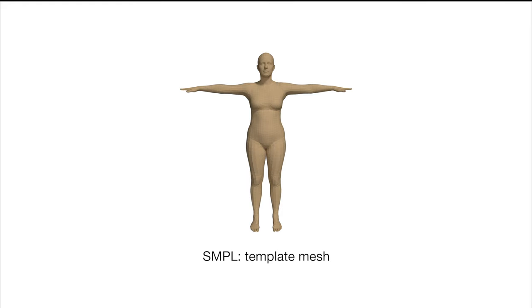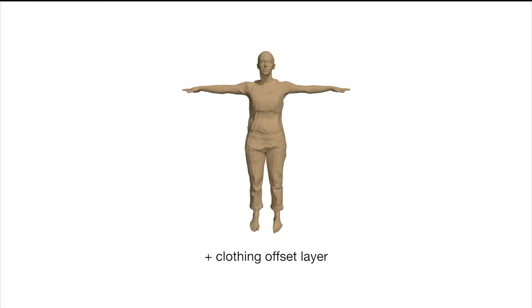SMPL starts from a template mesh and linearly adds offsets to represent different individual body shapes and pose-dependent deformations. Building upon this, we add a new clothing offset layer, which is a function of body pose theta,